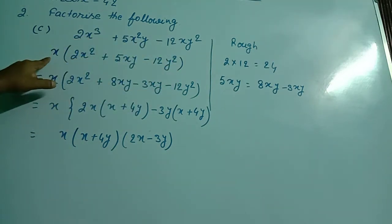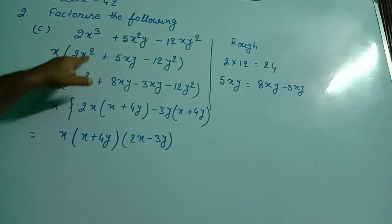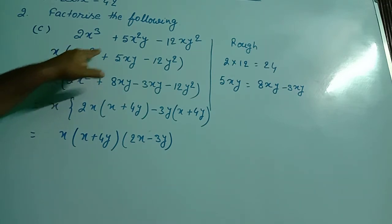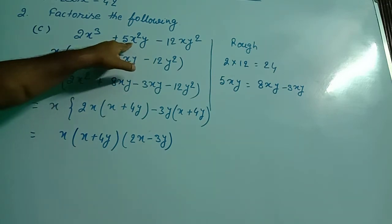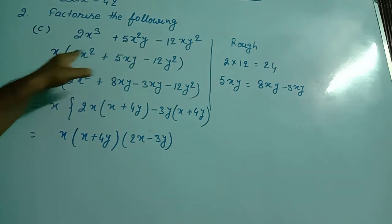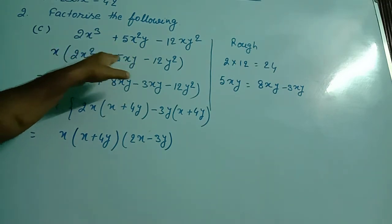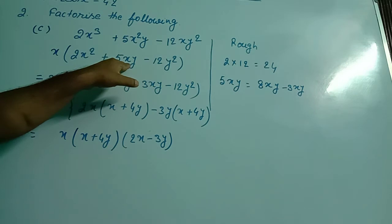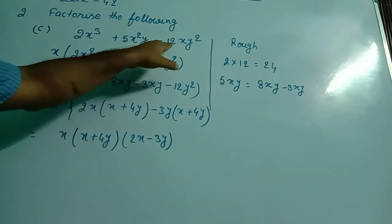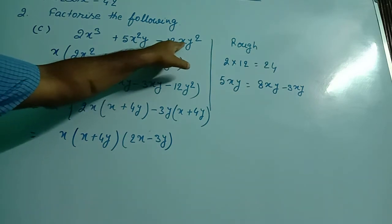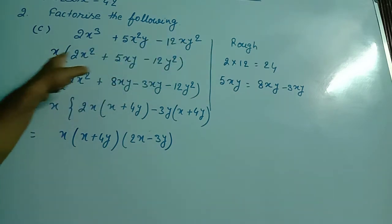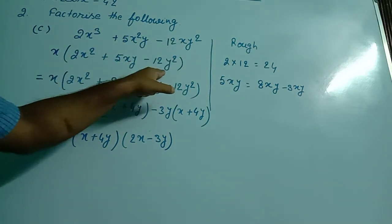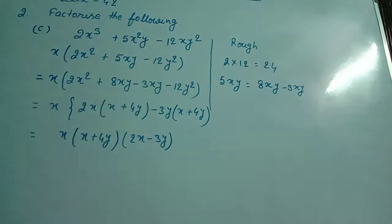Here, X is taken out, so 2x² is left. From here, X is taken out, so plus 5xy is left. From here, X is taken out, so only minus 12y² is left.